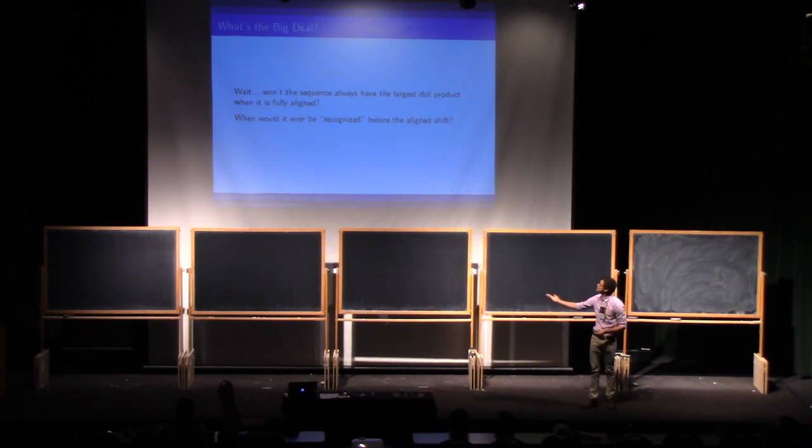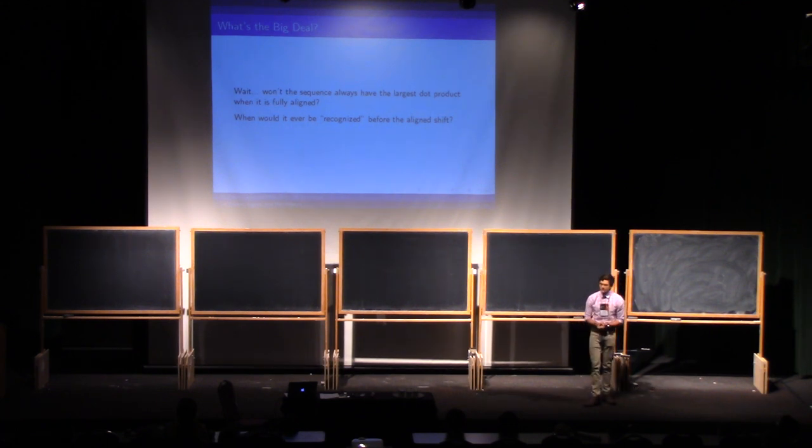Okay, what's the big deal? Won't the sequence always have the largest dot product when it's fully aligned? I mean, it's based on the length, right? And if it's all going to agree at that aligned shift, it's not a problem. So, when would it ever be recognized before that aligned shift?